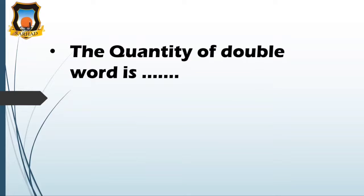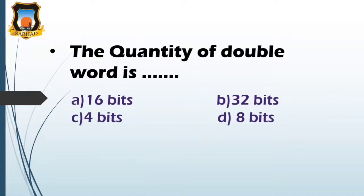Next question: the quantity of double word is - option A 16 bits, option B 32 bits, option C 4 bits, and option D is 8 bits. So the correct answer is B, that is 32 bits. Because one word means 16 bits, thus the quantity of double word is 32 bits.